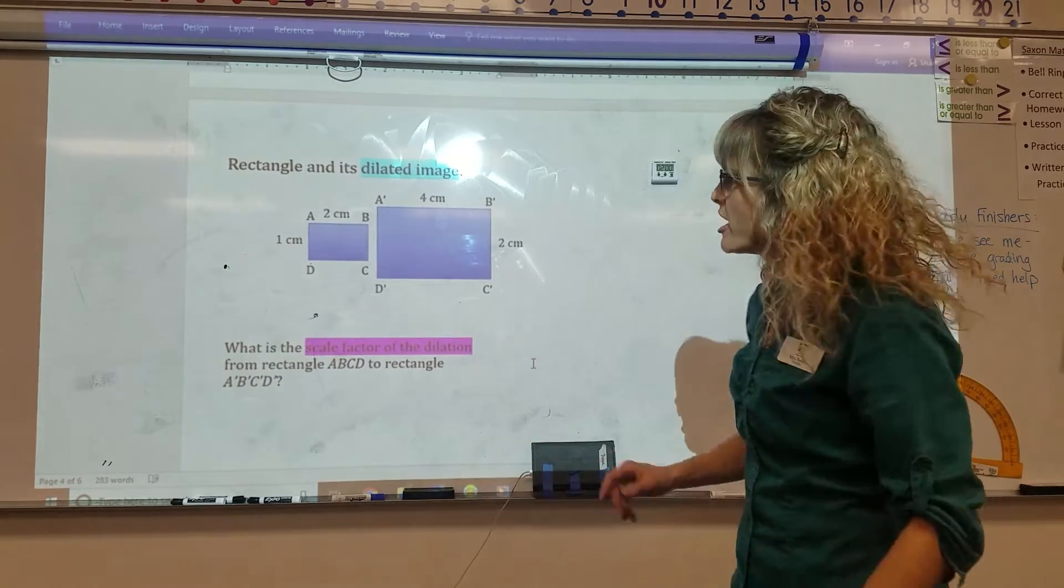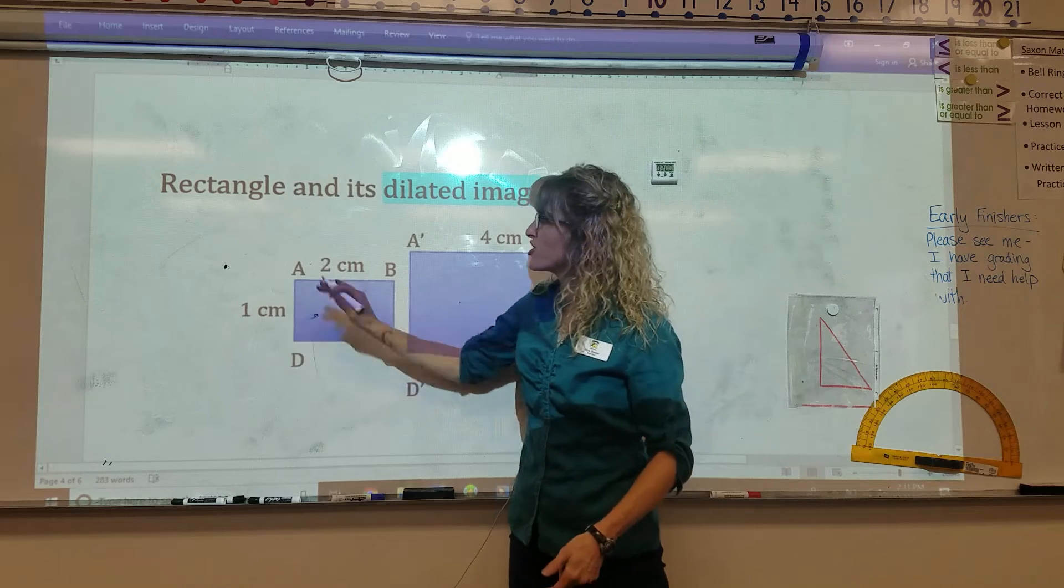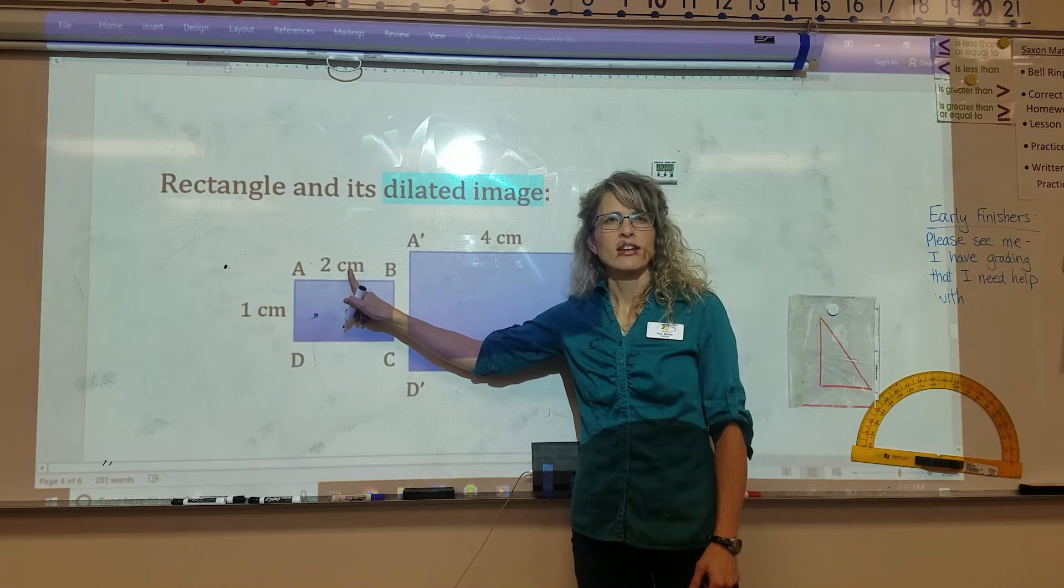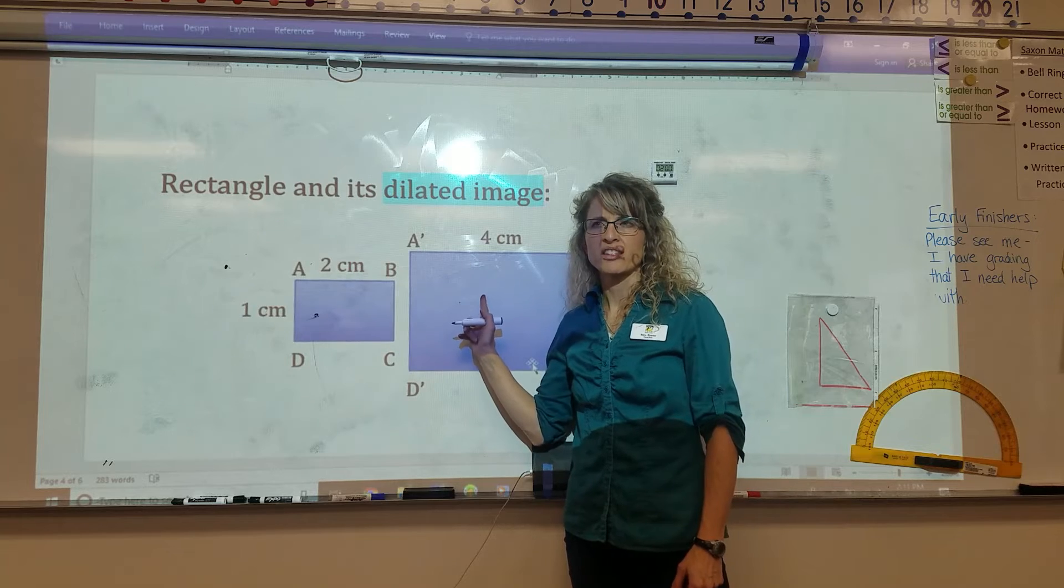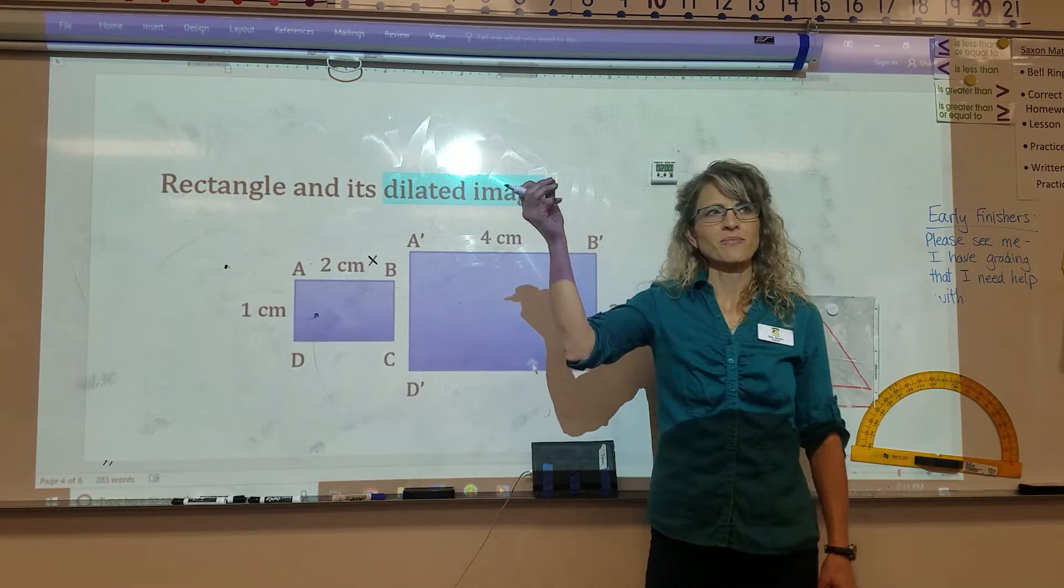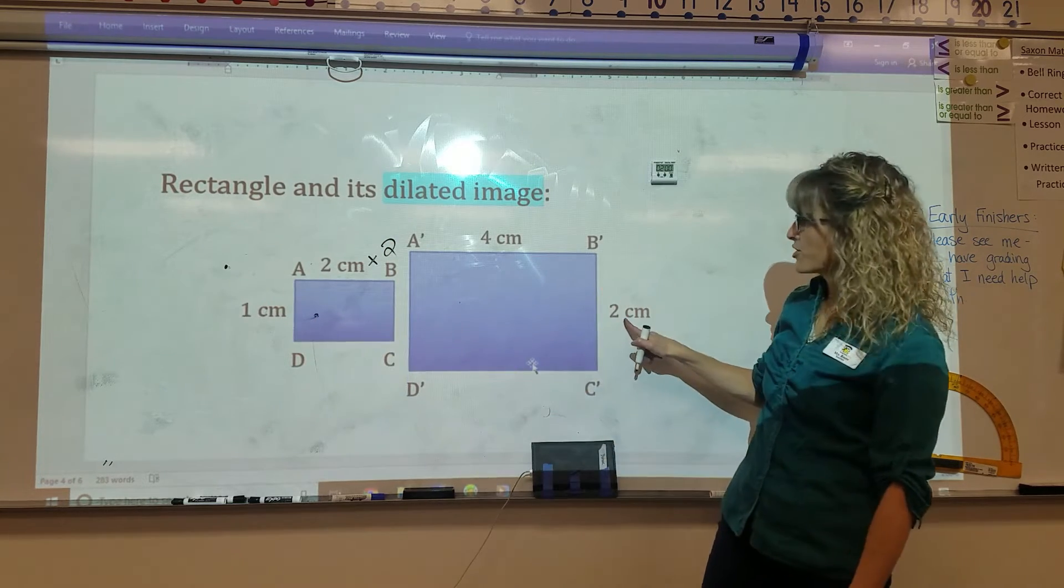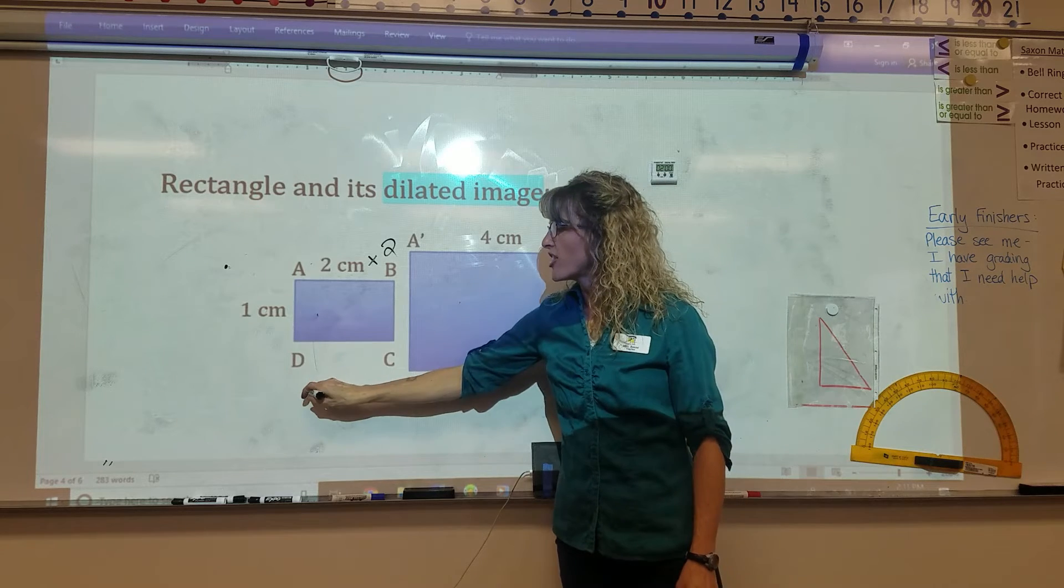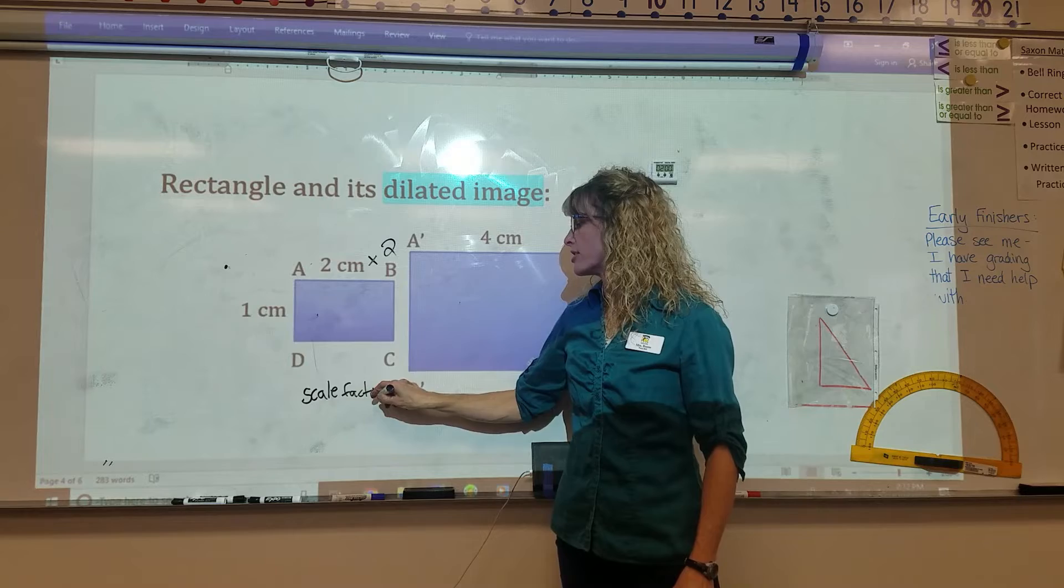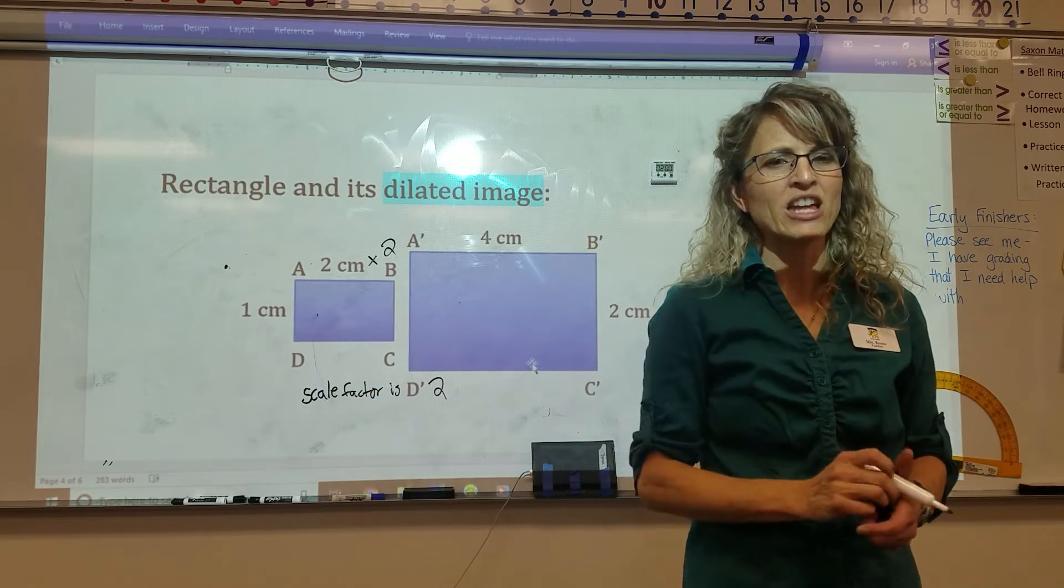So let's look at a little bit of numbers. This is right there in the book. The pre-image has dimensions 1 and 2, but the new image has dimensions 4 and 2. So my question is, how much bigger is this? What would I times 2 by to get the 4? 2. Same thing for here. I times that by 2 to get 2. So we call that a scale factor. The scale factor is 2.